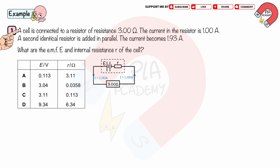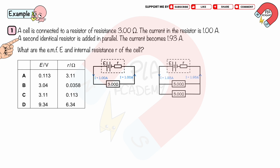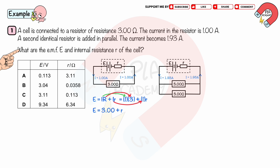A cell is connected to a resistor of resistance 3.00 ohms. The current in the resistor is 1.0 A. A second identical resistor is added in parallel, and the current becomes 1.93 A. What are the EMF E and internal resistance r of the cell? From the equation E equals I(R + r), for the first circuit, substituting I equals 1 A and R equals 3 ohms, we get E equals 3.00 plus r.